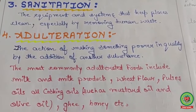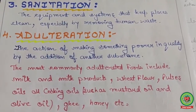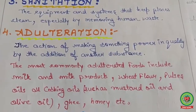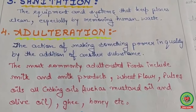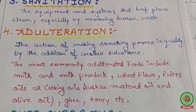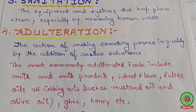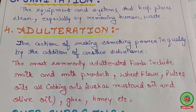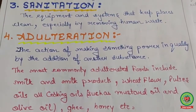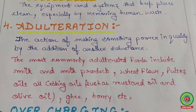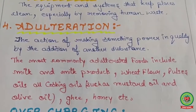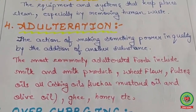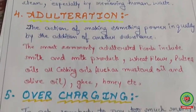The most commonly adulterated foods include milk and milk products, wheat flour, pulses, cooking oils such as mustard oil, olive oil, ghee, and honey.